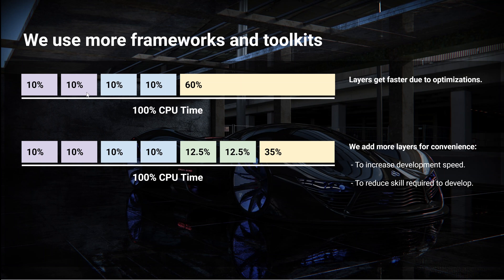Now let's imagine the bottom four layers are optimized by their developers, so now they only take 10% of the total CPU time each, leaving 60% of the CPU time for your application — your application just got another 10% of CPU time. But then what tends to happen is that we simply add more convenience layers, each taking some CPU time. In the illustrated case we add another two layers each taking 12.5%, leaving only 35% of the total CPU time for your application. So even if the lower layers were optimized, you simply added more layers out of convenience and end up with less CPU time.